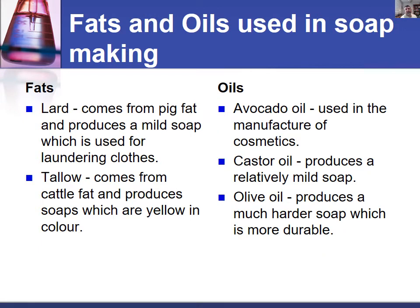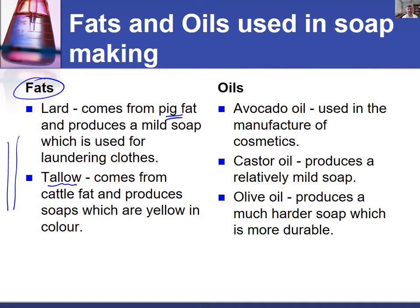Some of the fats and oils used in soap making — looking at animal fats first: lard is a pig fat and can be used for soaps used for laundry. Tallow is another fat, more related to cows and cattle, and tends to produce more yellowy types of soaps. These are the traditional soaps, the way that soaps used to be made.